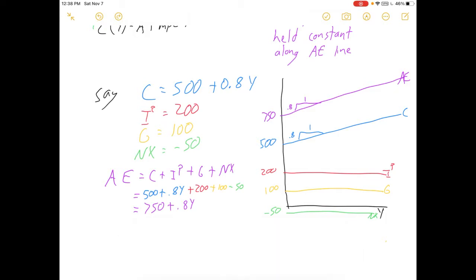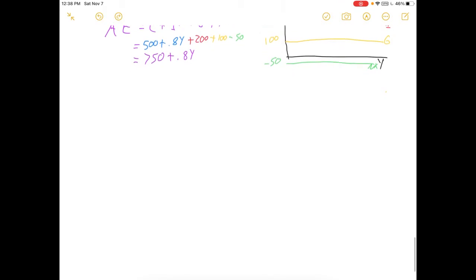Aggregate expenditures and consumption will always be parallel in this model. Yeah, that's kind of how you build it.